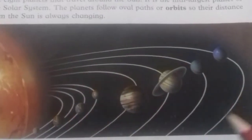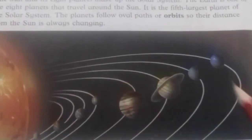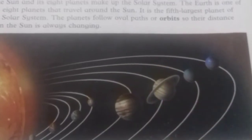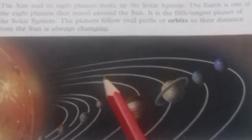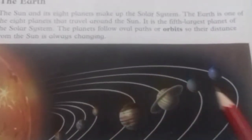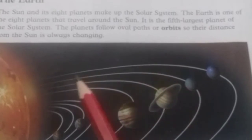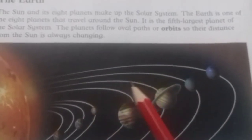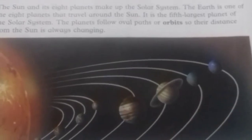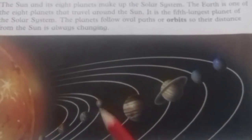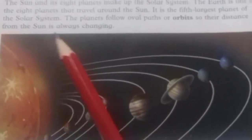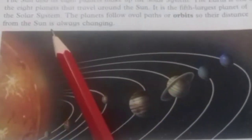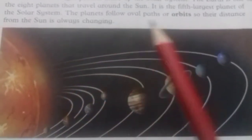It is not in a round shape, it is in an oval shape. Yeh oval shape mein jo hai, apna is ka oval path hai — orbit hai — jis se yeh kya karte hain, yeh move karte hain sun ke gird. So their distance from the Sun is always changing.